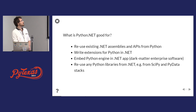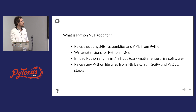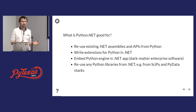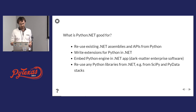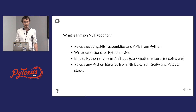So what is Python for .NET good for? Reuse existing .NET assemblies and APIs from Python. Write extensions for Python in .NET. Embed Python engine in a .NET app — this is what I call dark matter enterprise software. A lot of enterprise software is written in .NET and they want to expose a scripting API. And recently we've seen a lot of activity in the SciPy, PyData community and TensorFlow.